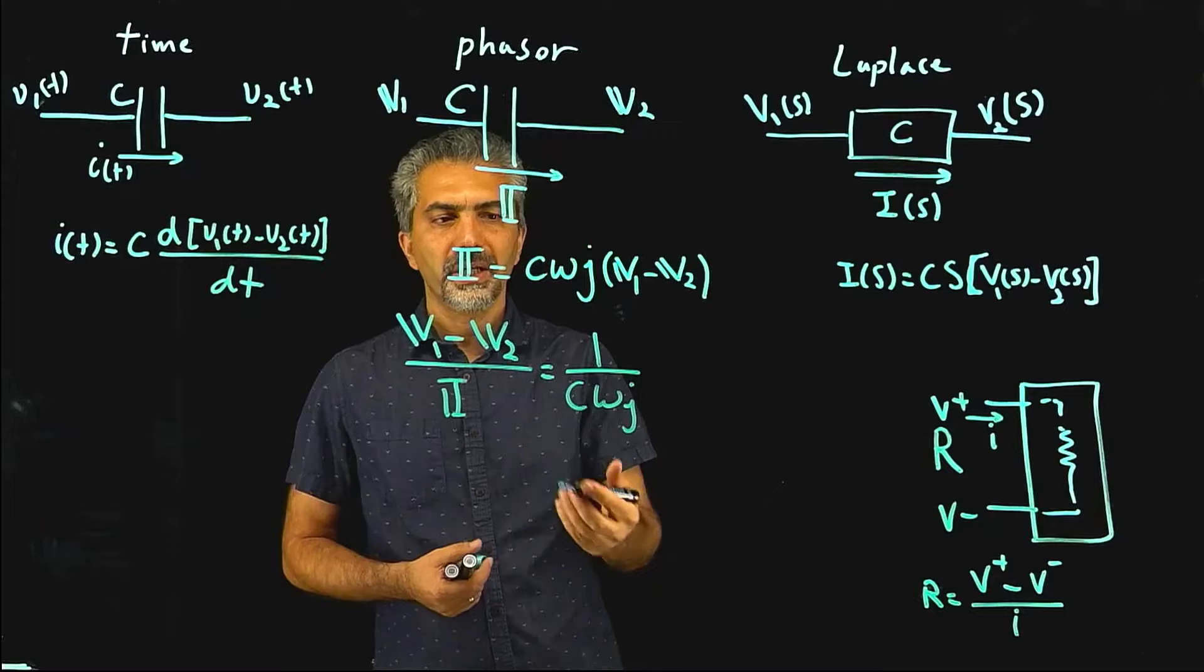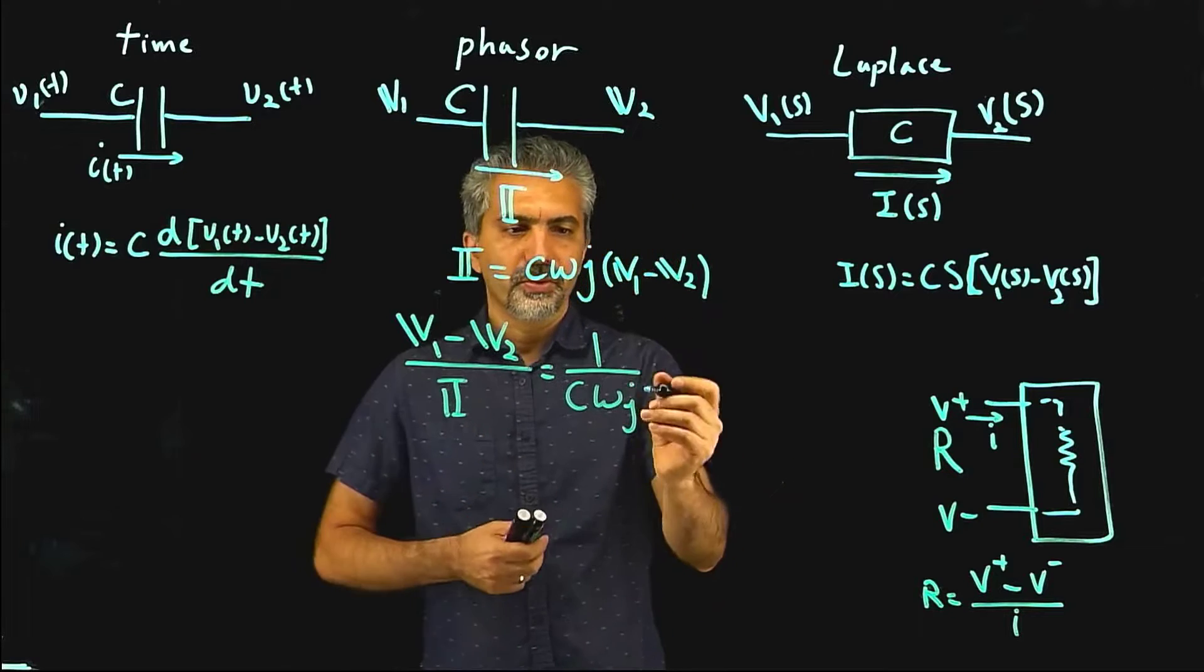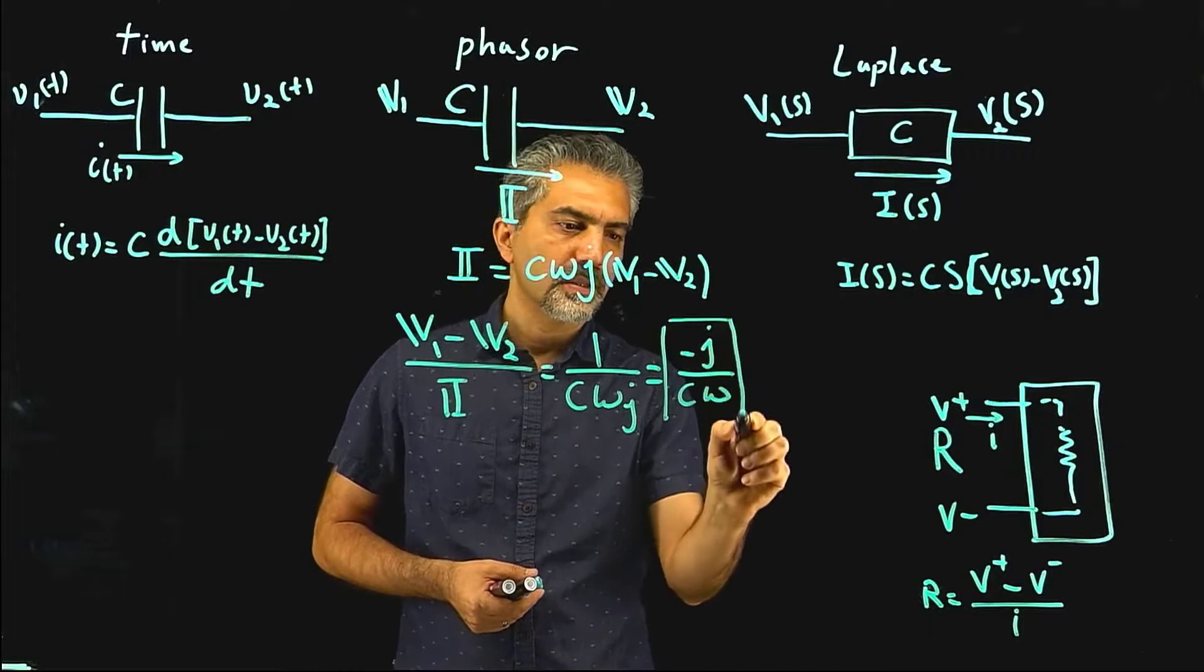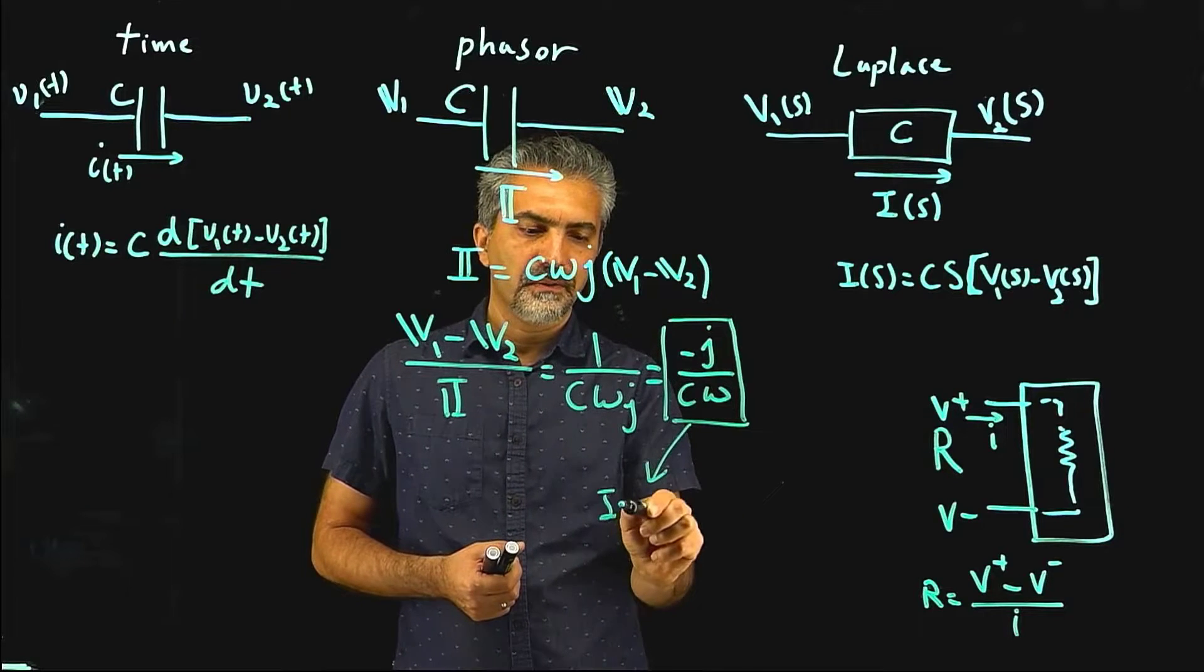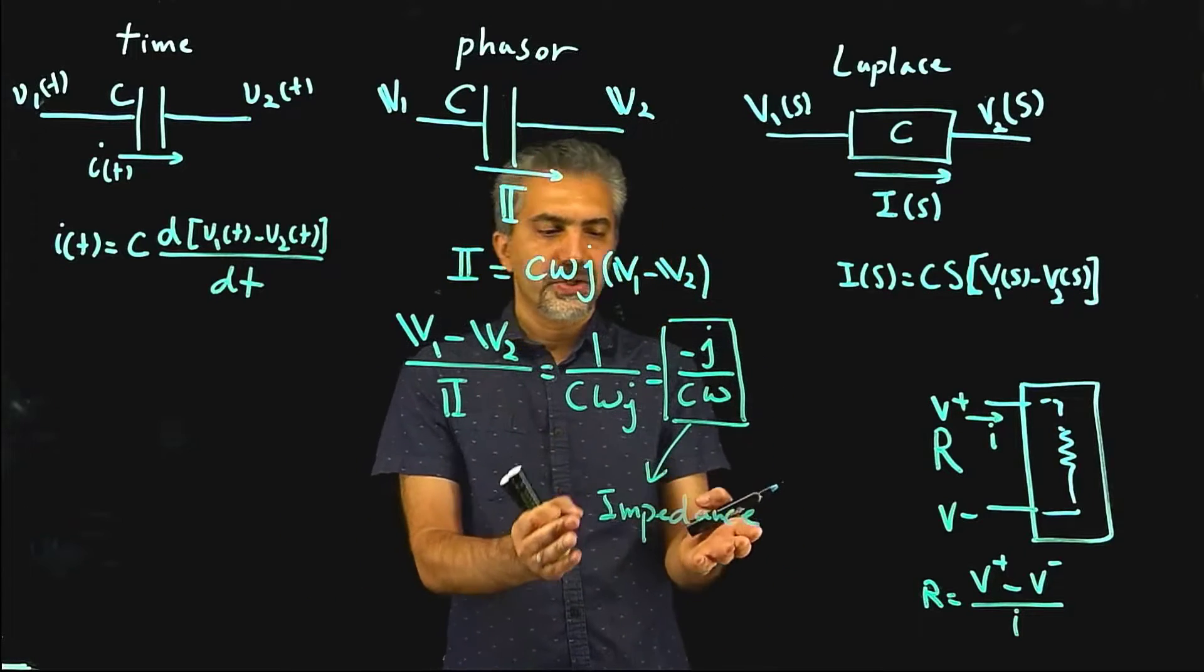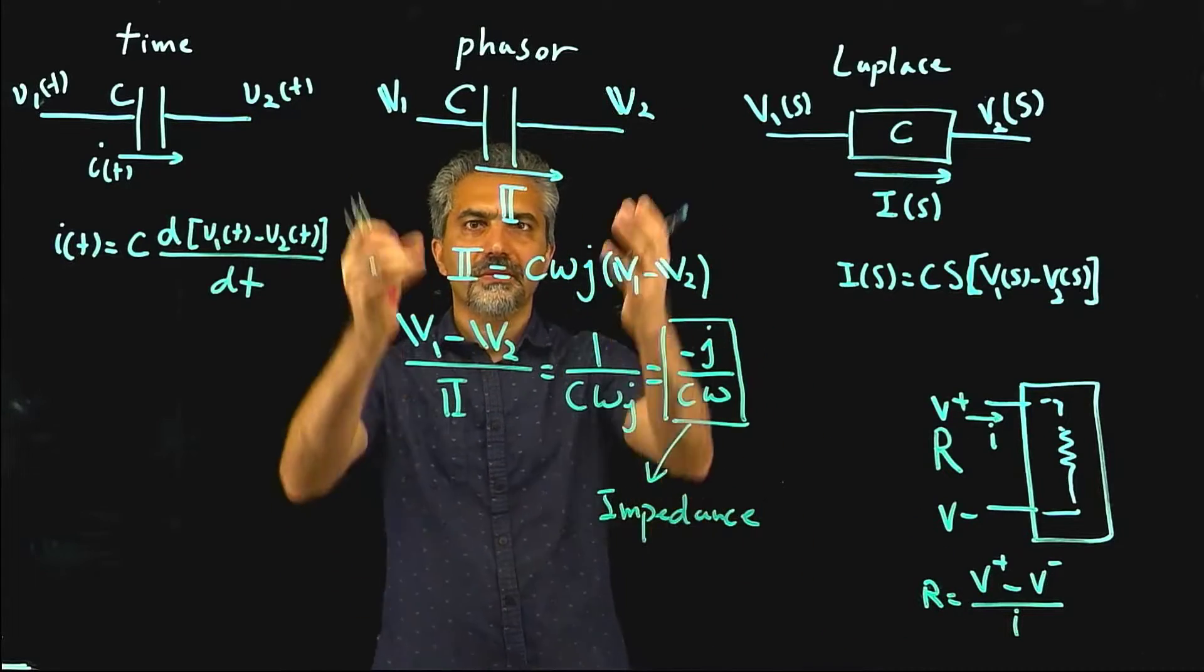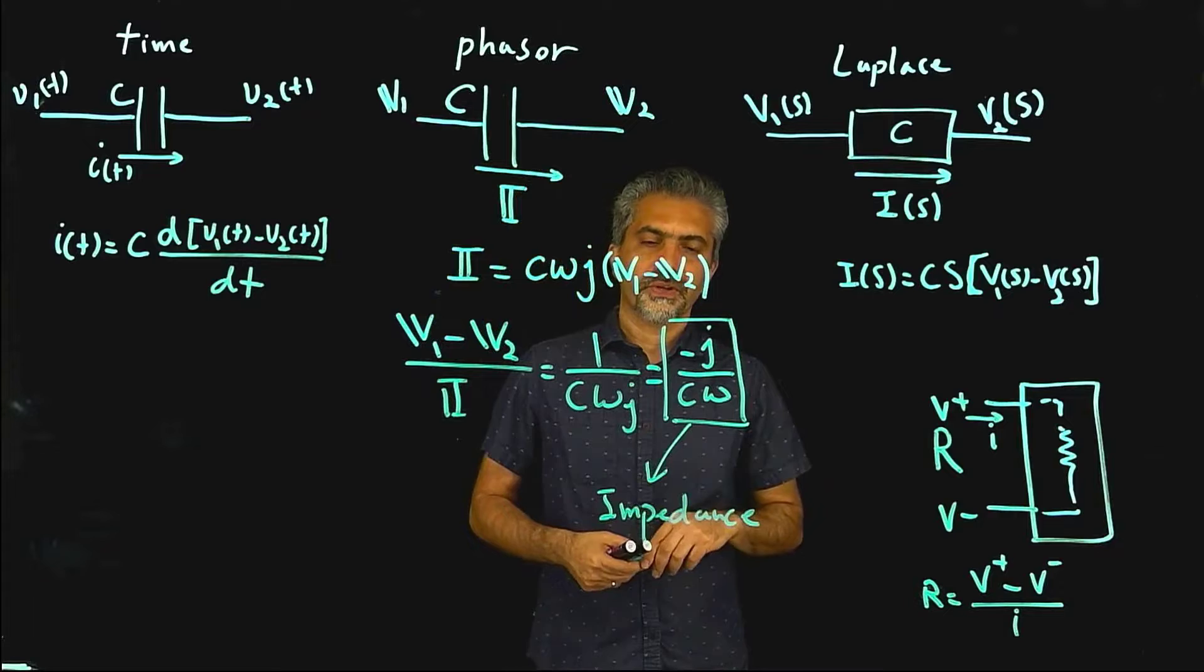At which point you could again take the difference between the two voltages this time in the phasor domain and divide that by the current. So if we did that there, it would be with the same definition of now v1 minus v2 divided by the current, it would be the phasor domain v1 minus the phasor domain v2 divided by the phasor domain current would be just 1 over c omega j. So this again is just a number. The only difference is that this number is not a real number is a complex number. You can also write this as minus j over c omega. Now I can call this something, and we did, and we ended up calling this impedance. So we mentioned that the impedance is the more general definition of resistance or the same definition as the resistance in the phasor domain. You take the voltage difference and divide it by the current in the phasor domain, and you get this new concept or definition that we call impedance.